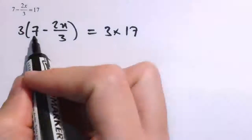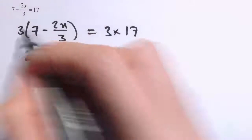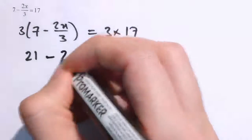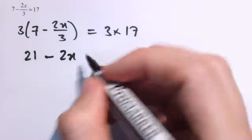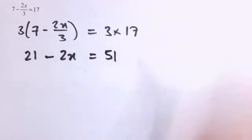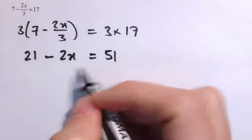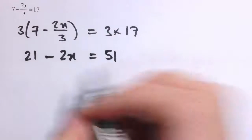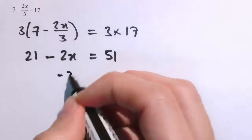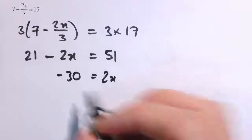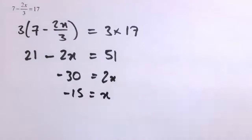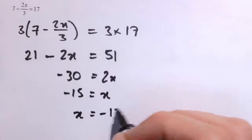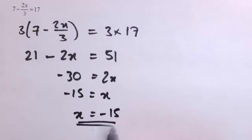So we do 3 times 7, which is 21. 3 times 2x over 3, which is just 2x — that's why we multiply by 3, to get rid of that denominator. And 3 times 17 is 51. Rearranging gives 21 minus 51 equals minus 30, which equals 2x. So x equals minus 15.